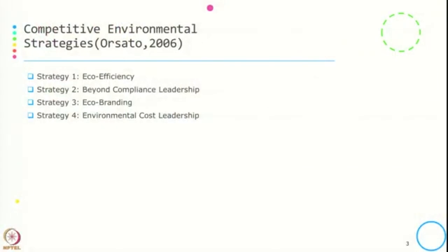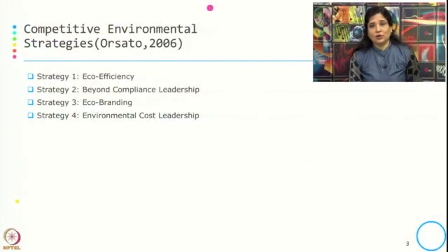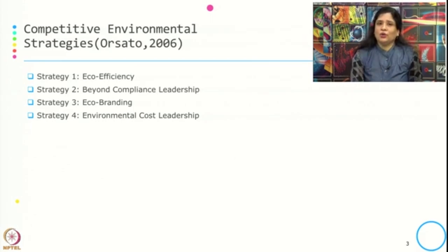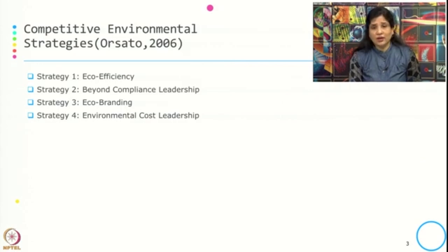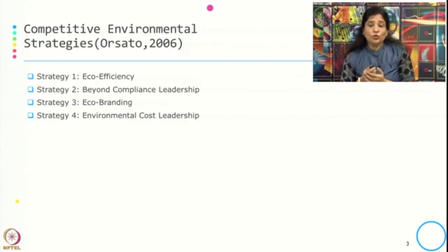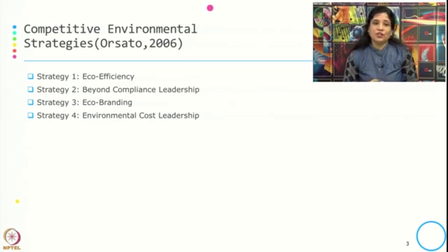To start with, there are 4 types of competitive environmental strategy given by Oraceto in 2006. He listed out 4 kinds: Strategy 1 — eco efficiency; Strategy 2 — beyond compliance leadership; Strategy 3 — eco branding; and Strategy 4 — environmental cost leadership.